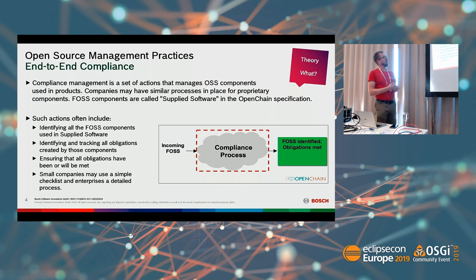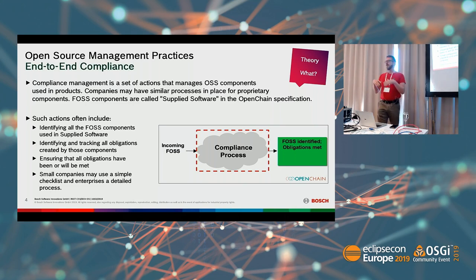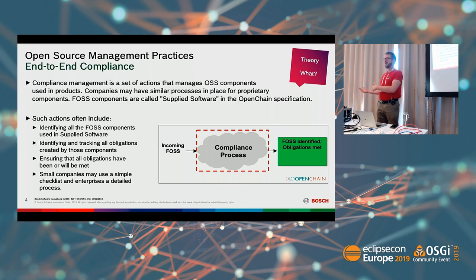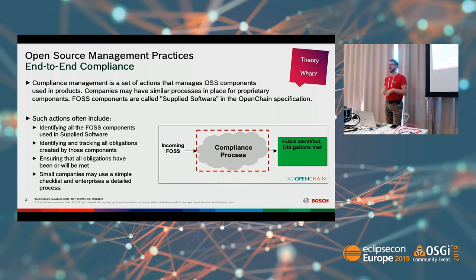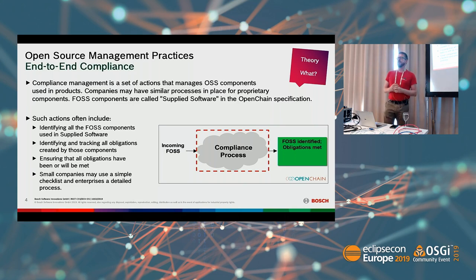This is also potentially part of a supply chain. I'm from Bosch; we are typically a tier one supplier. We take software from our suppliers and give software to automotive companies, who then have to provide legal information to their customers — the end users of the car. So the information has to flow throughout the whole supply chain, providing all the information needed to fulfill those obligations.